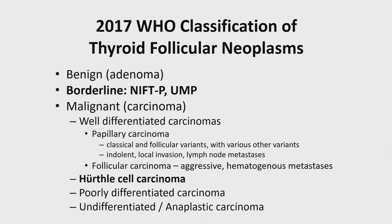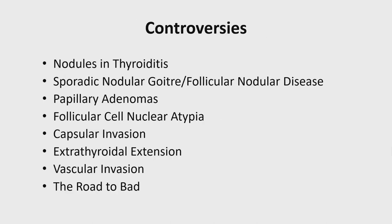In the 2017 WHO classification, we ended up with some new introductions and a recurrence of something that had been deleted — the borderline lesions of NIFT-P and UMP, and the reemergence of Hürthle cell carcinoma. Those are two things I'm going to focus on today to discuss the reasons for these changes.